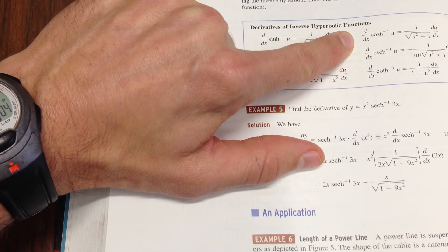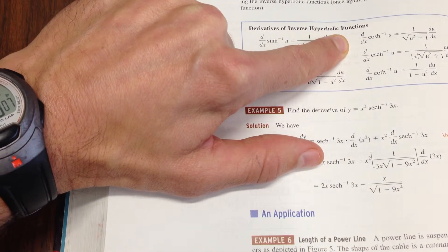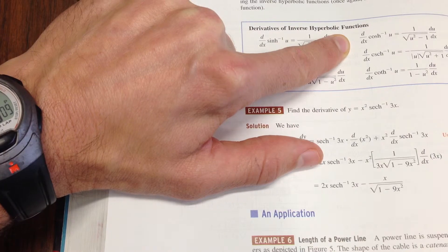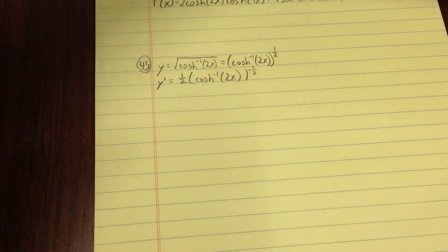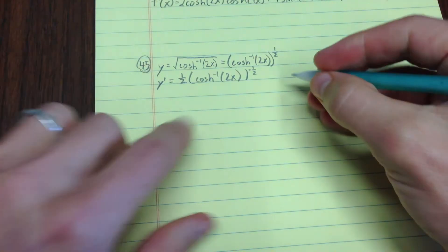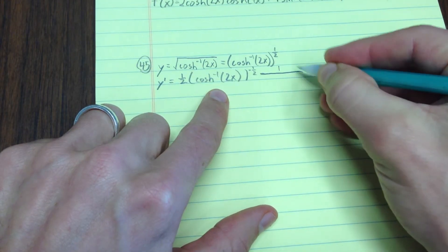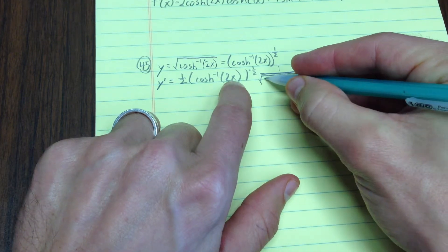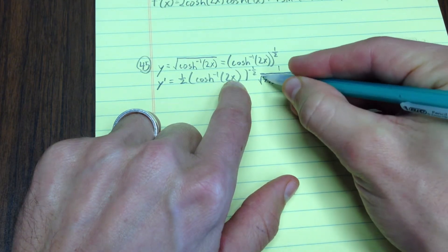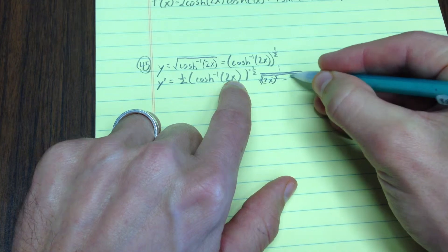Here it is on page 582 of Tan's book. The derivative of cosh inverse is 1 over the square root of u squared minus 1. So, what we'll do is we'll write that here,